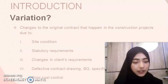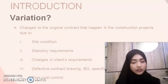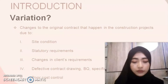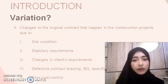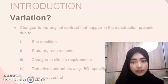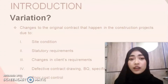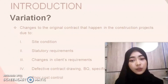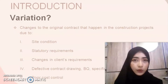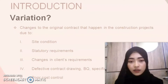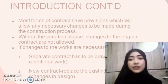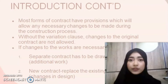What is Variation? Variation is an adjustment of the scope of work in a building contract in the form of an extension, removal or exclusion from the original work. The changes to the original contract that happen in construction projects are due to site condition, statutory requirements, changes in client's requirement, defective contract drawing, BQ, specification, and poor cost control. Most forms of contract have provisions which allow necessary changes to be made during the construction process.